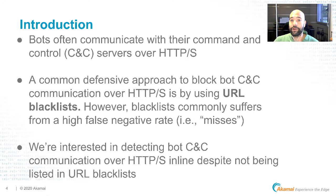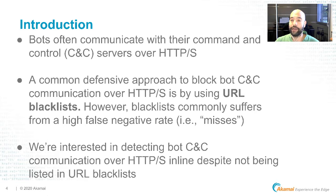Bots often communicate with their command and control server over the HTTP or HTTPS protocol. A common defensive approach to block botnet command and control communication over these protocols is by using URL blacklists, so that if a bot attempts to communicate with its command and control server by reaching out to a URL that is known and listed within a URL blacklist, we can block the communication. The primary drawback of URL blacklists is that they commonly suffer from a high false negative rate because they are not updated frequently enough and therefore don't generalize to new upcoming botnets.